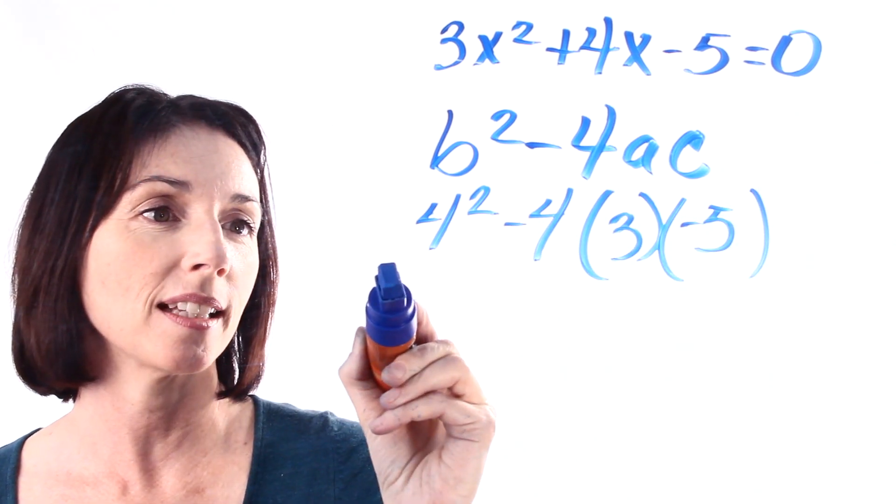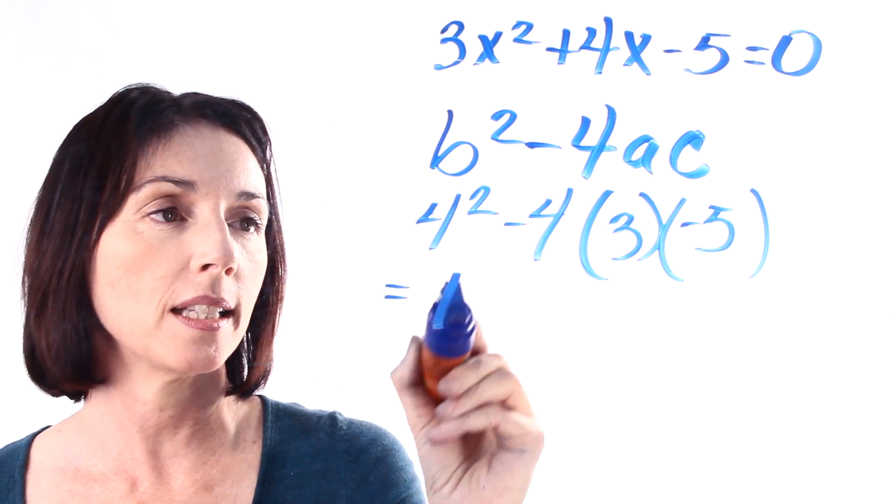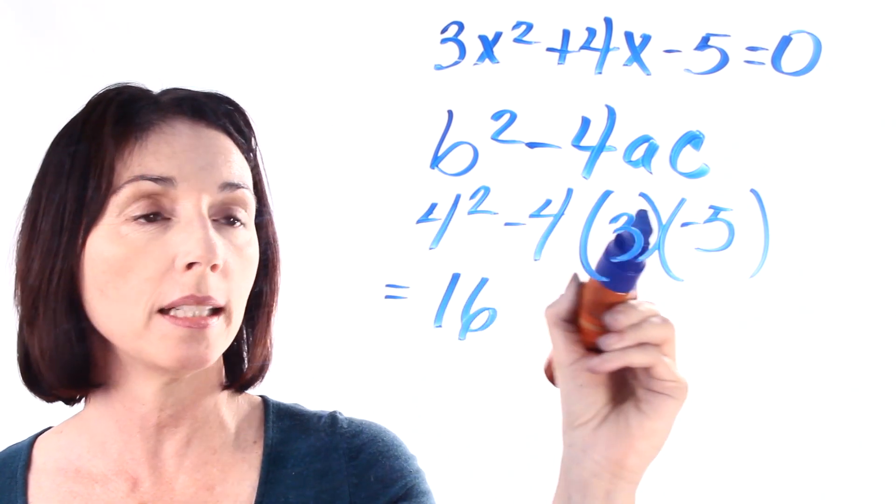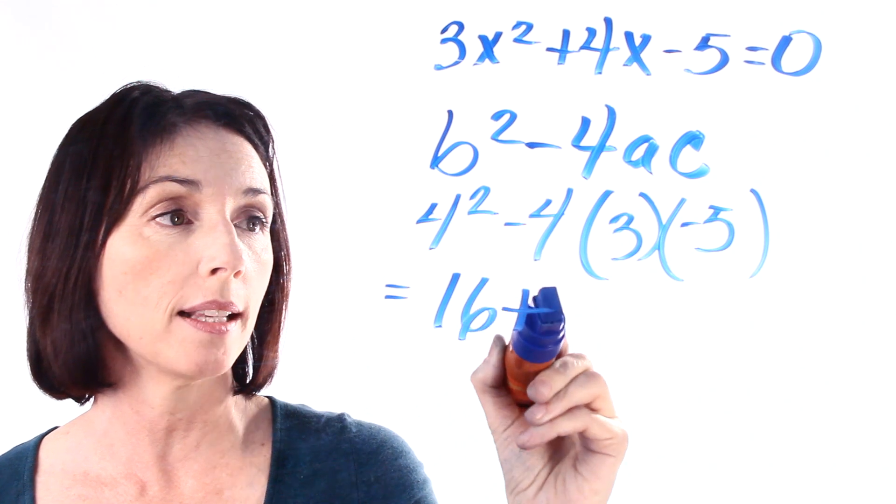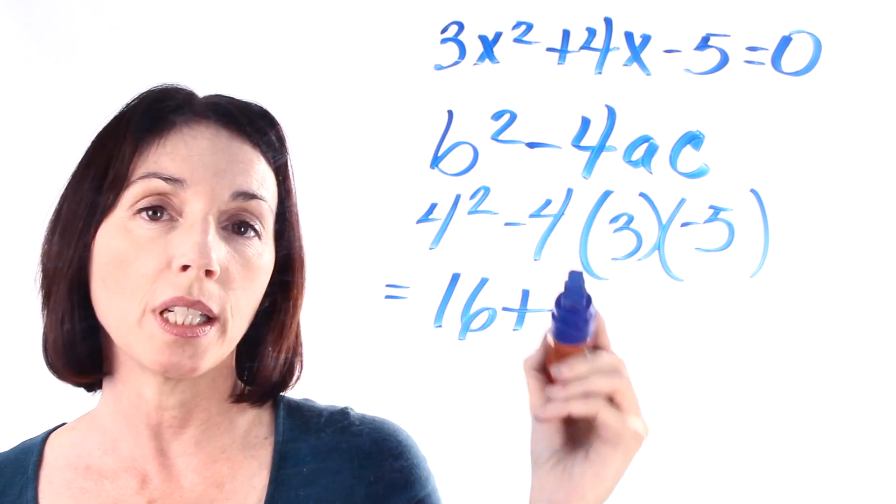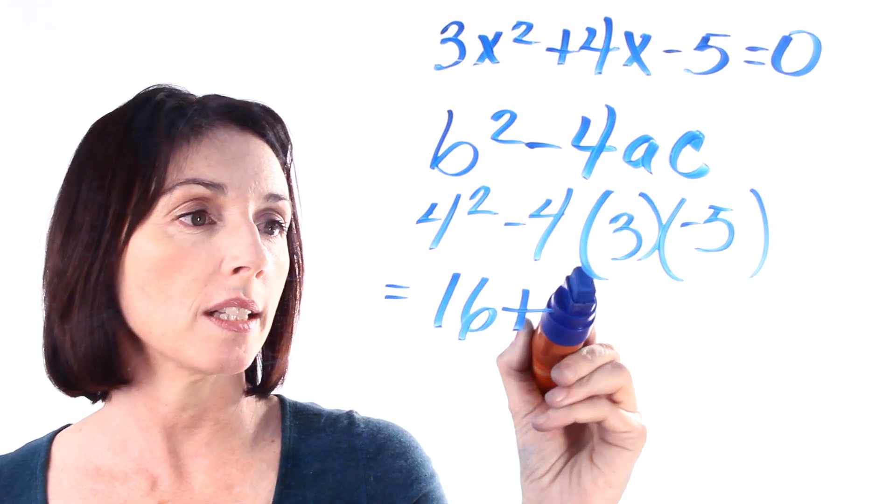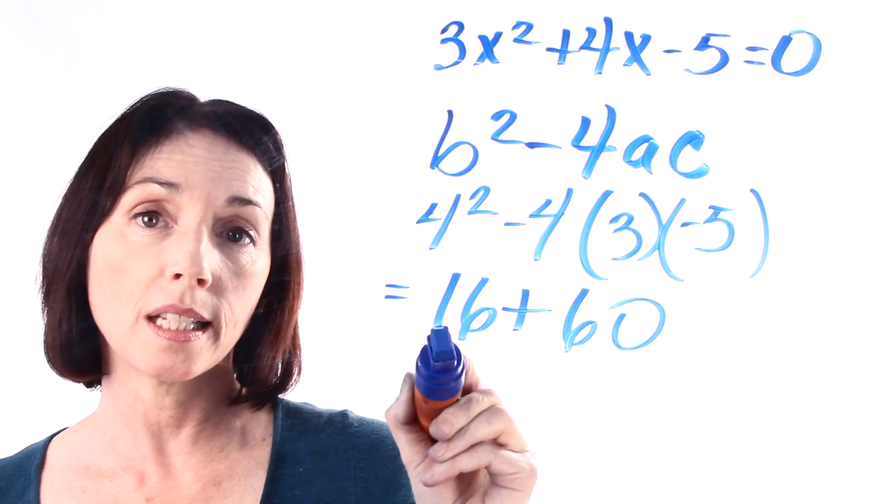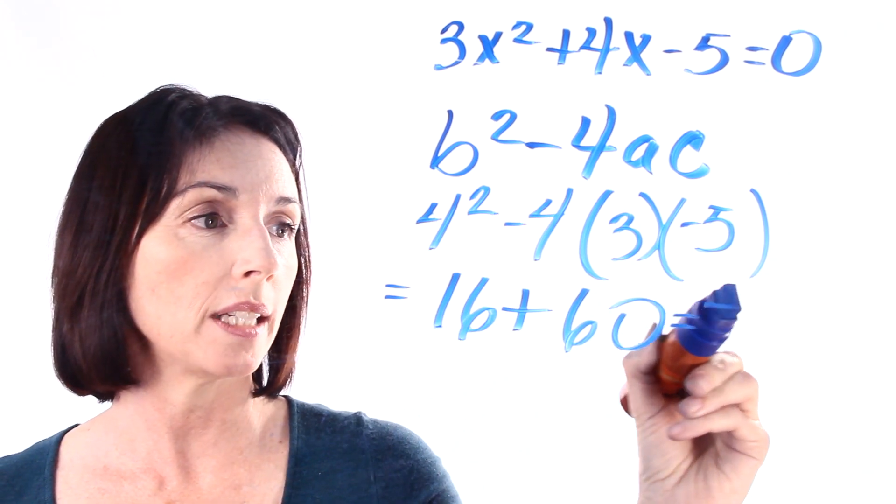So let's see what happens when we calculate this. 4 squared is 16. Now we have a minus times a minus here, so that'll give us a plus. 5 times 3 is 15, and 15 times 4 is 60. So 16 plus 60 is equal to 76.